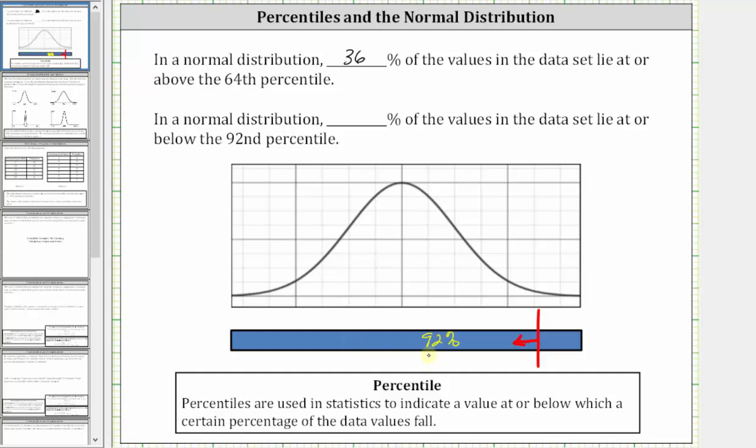Which means 100% minus 92% or 8% of the data values must be at or above the 92nd percentile or this data value.